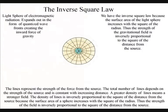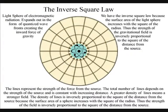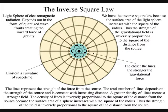We have the inverse square law because the surface area of the light sphere increases with the square of the radius. Thus the strength of the gravitational field is inversely proportional to the square of the distance from the source.